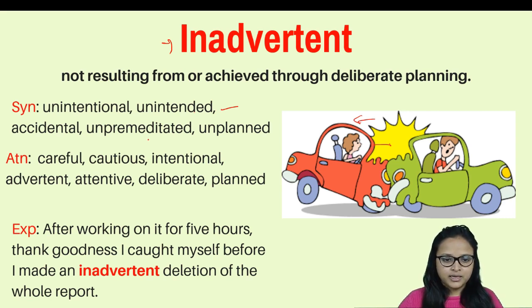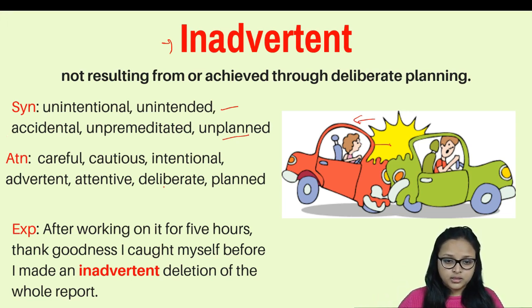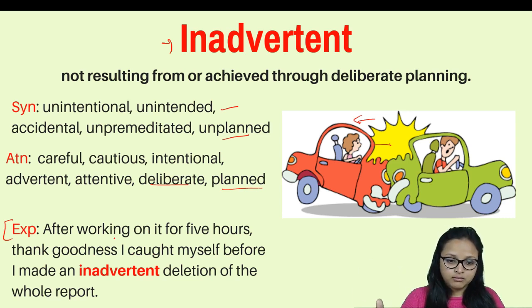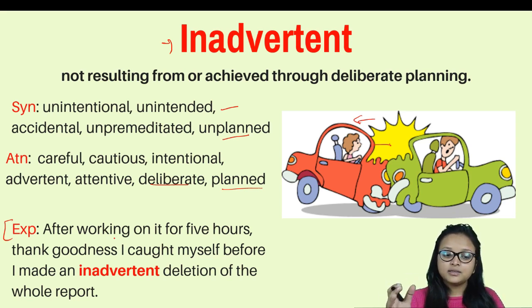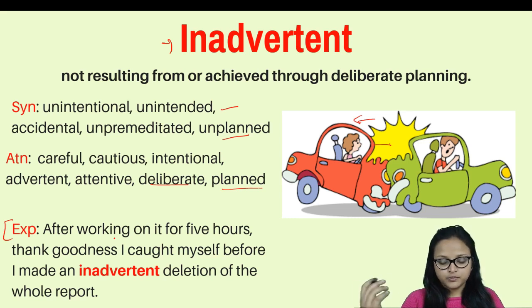Synonyms of inadvertent are: unintentional, unintended, accidental, unpremeditated, and unplanned. Antonyms are: careful, cautious, advertent, attentive, deliberate, and planned. Example: After working on it for five hours, I was thankful I caught myself before making an inadvertent deletion of the whole report — meaning he nearly deleted the report unintentionally without planning to do so.